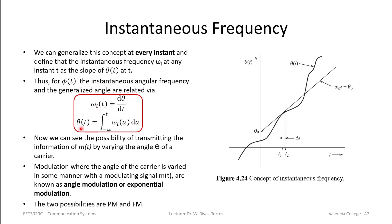If you know the instantaneous frequency, you can always determine what the generalized phase is, because it's nothing but the integral from minus infinity to t using a dummy variable α. Any modulation where the angle of the carrier varies is what we call angular modulation, or exponential modulation — angle modulation being the more general term. There are always two possibilities: frequency and phase, and that's where both PM and FM come from.